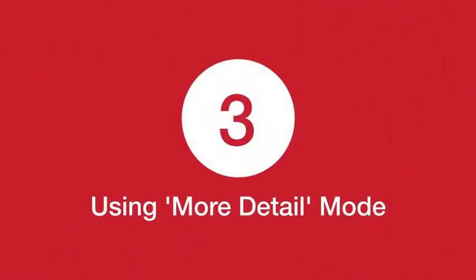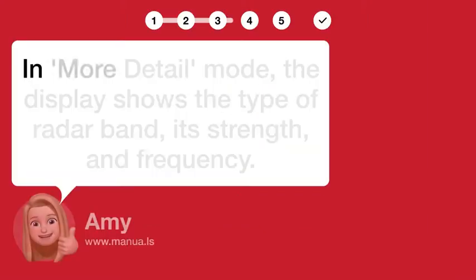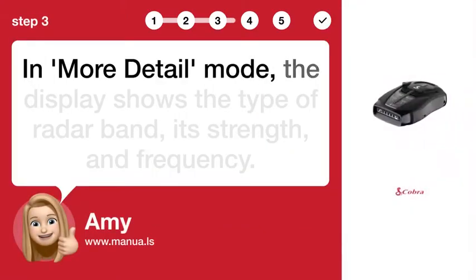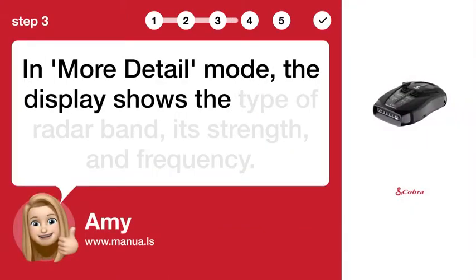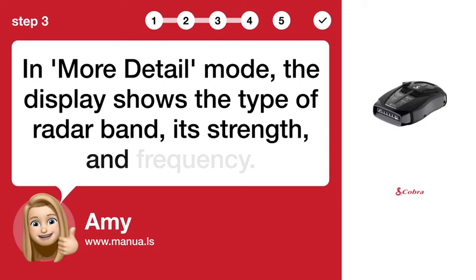Step 3: Using more detail mode. In more detail mode, the display shows the type of radar band, its strength, and frequency.